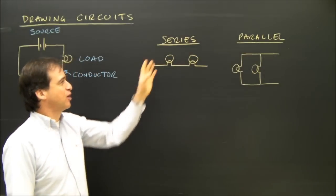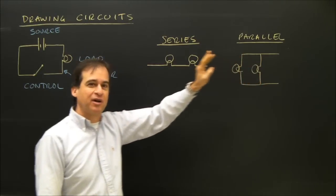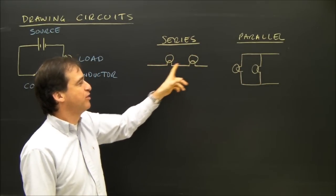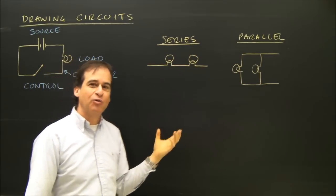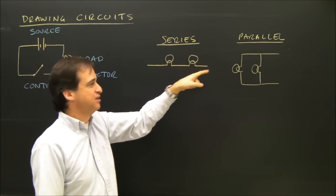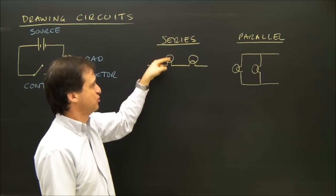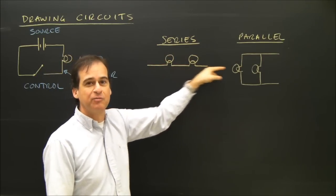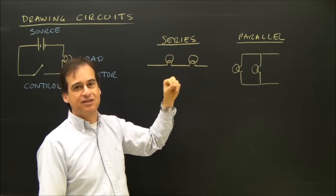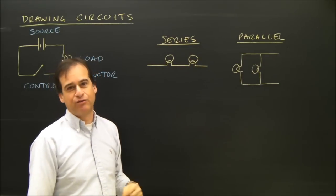Some of the other videos I have talk about series and parallel, but I'm going to cover it just briefly here. Series is when you have one thing after the other — the electricity only has one path to go through. Here are two bulbs in series. Electricity goes through the first bulb, then the second, and continues on. If one of these is disconnected, then the electricity can't flow at all.